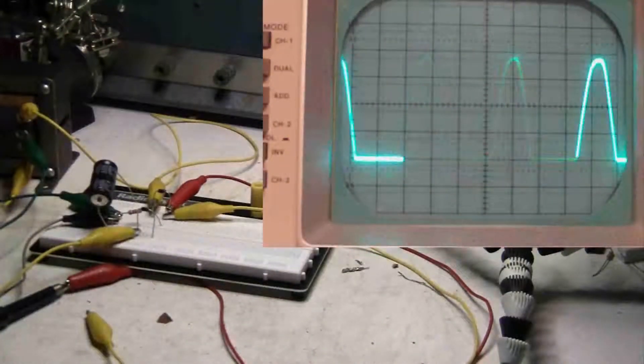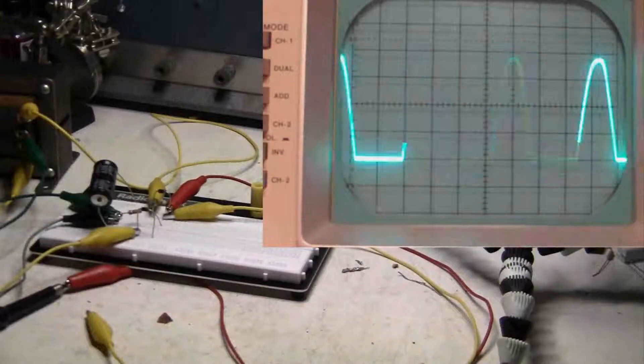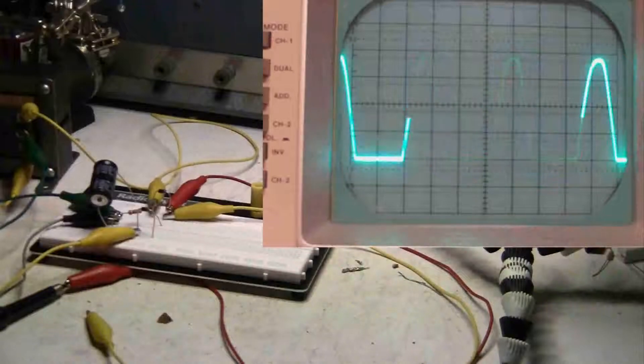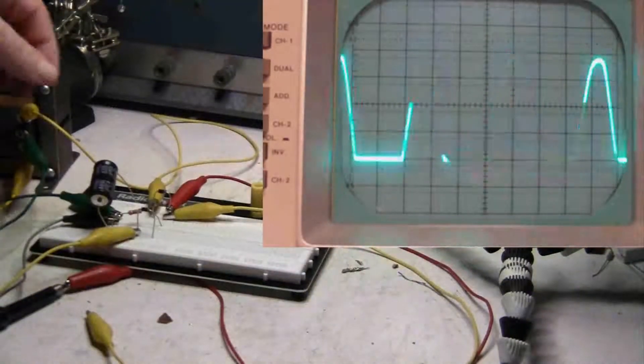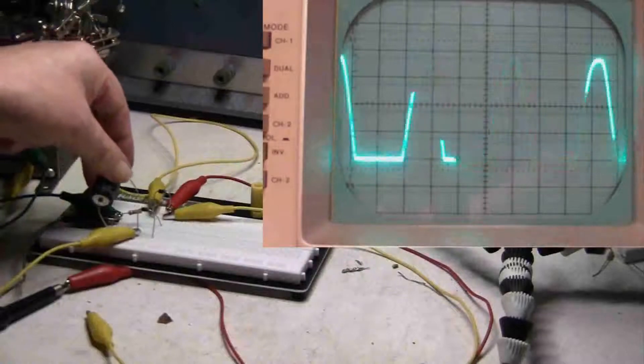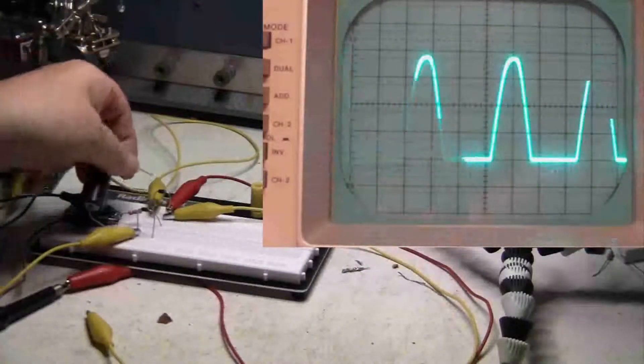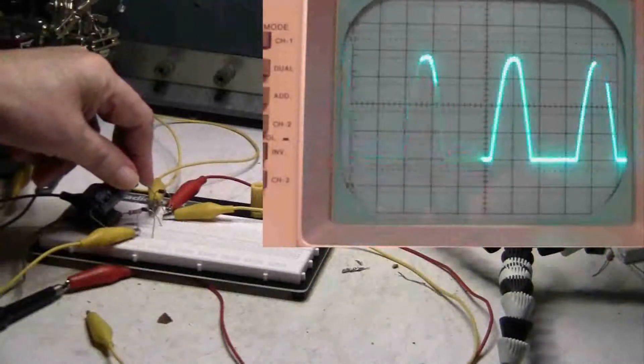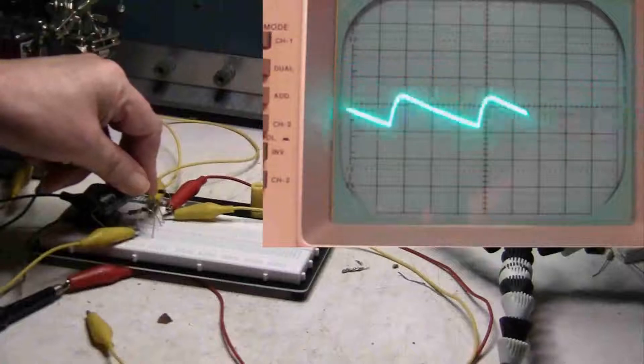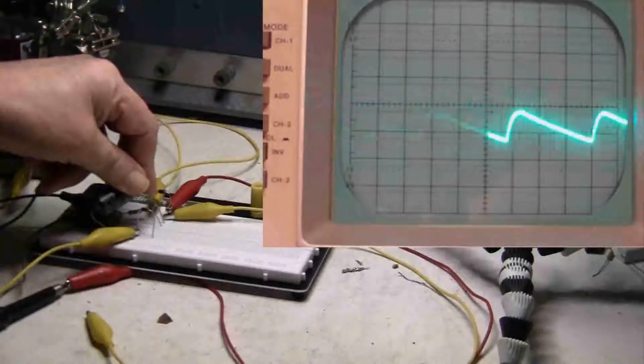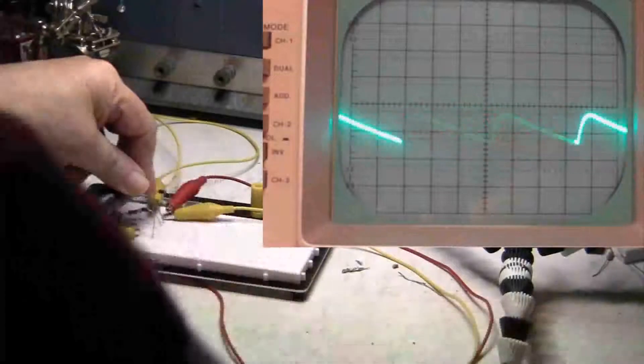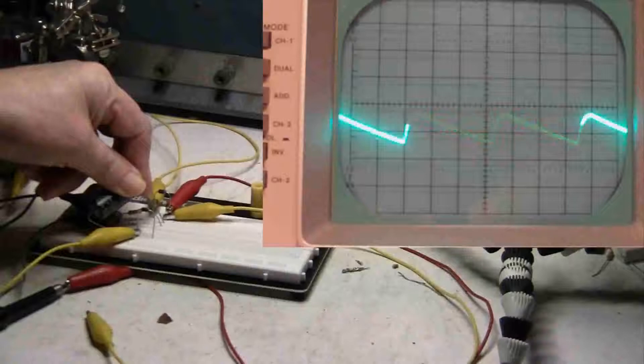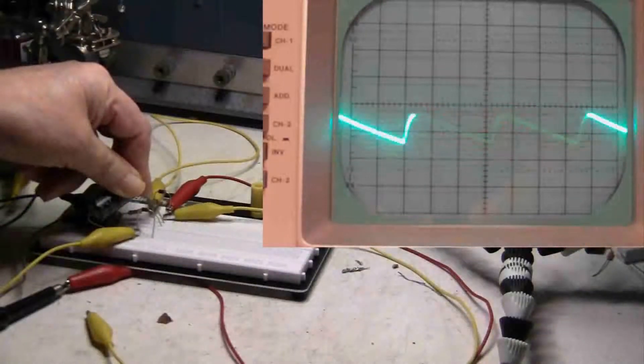Okay I've got this hooked up on half-wave and you can see the positive pulses. Now I'm going to hook up the 47 microfarad capacitor. And you can see that the 47 microfarad capacitor is filling in the gaps.